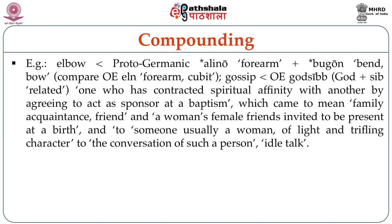For example, 'elbow' is actually from Proto-Germanic 'elinu' meaning forearm and 'bugan' meaning bend or bow — compare Old English 'ain', meaning forearm or cubit. 'Gossip' again is from Old English 'godsib' or 'gossib', meaning related — one who has contracted spiritual affinity with another by agreeing to act as sponsor at a baptism — which came to mean family, acquaintance, friend, and a woman's female friend invited to be present at a birth, and eventually to someone, usually a woman, of light and trifling character, meaning idle talk.